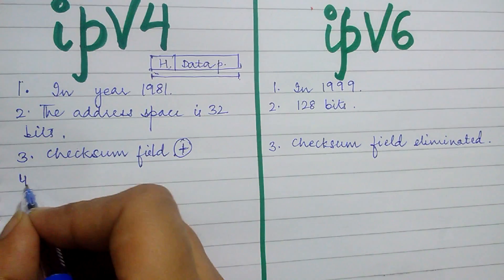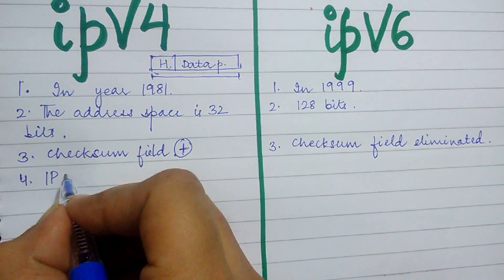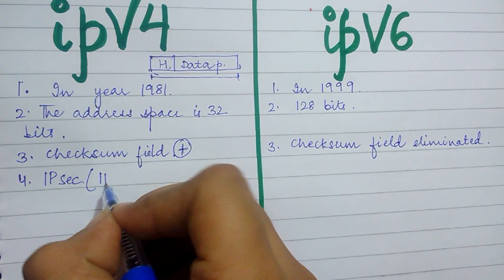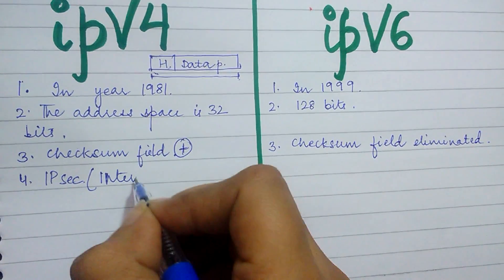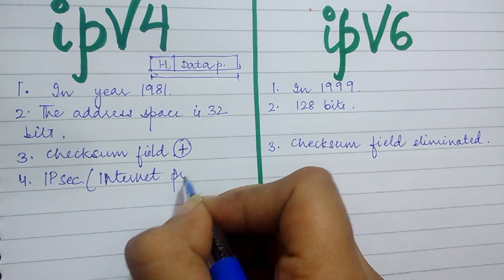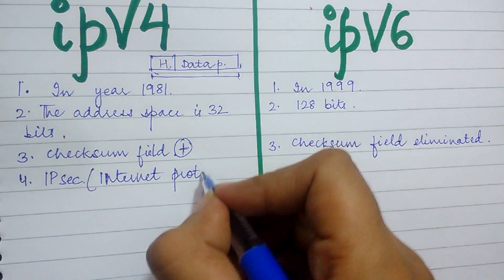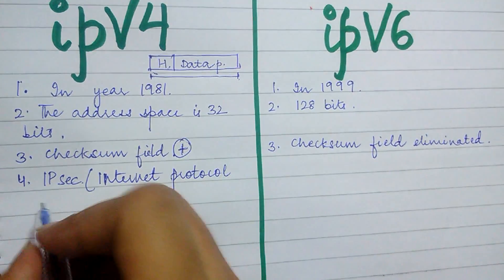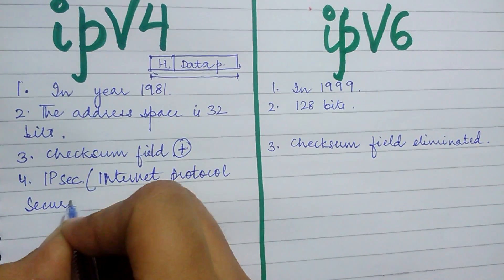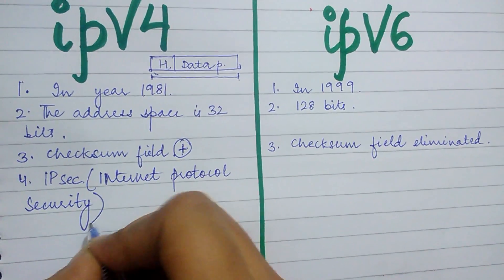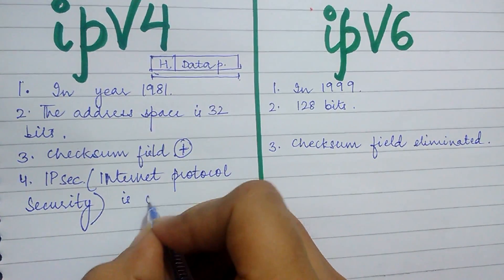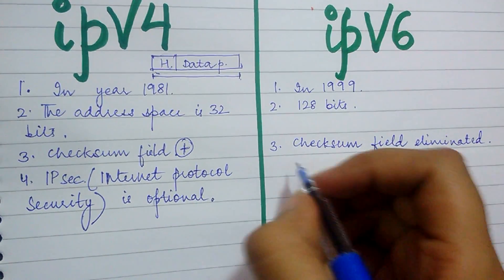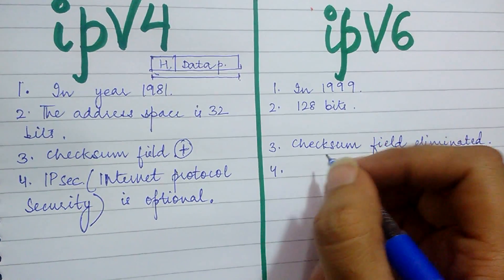The fourth point is that IPsec, that is internet protocol security, is optional and not that necessary in IPv4, while it is mandatory — you must have an IPsec layer — in IPv6.